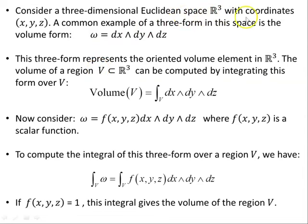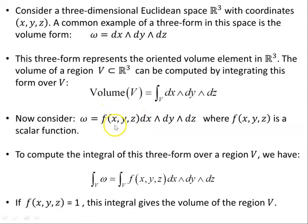Consider a three-dimensional Euclidean space R3 with coordinates x, y, z. A common example of a three-form in this space is the volume form omega equals dx wedge dy wedge dz. This three-form represents the oriented volume element in R3. The volume of region V, a subset of R3, can be computed by integrating this form over V: Volume(V) equals the integral of dx wedge dy wedge dz. If f(x,y,z) is a scalar function, then integrating omega equals f(x,y,z) dx wedge dy wedge dz over V integrates that scalar function over the region.